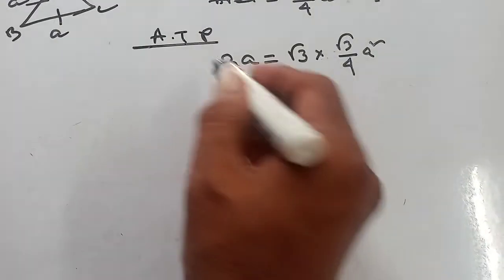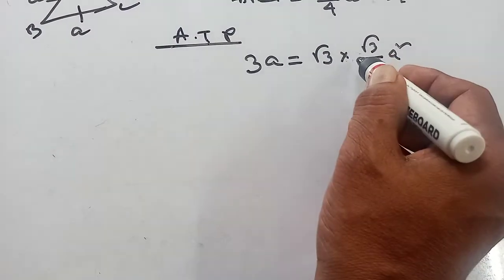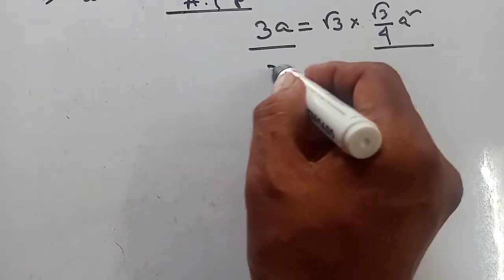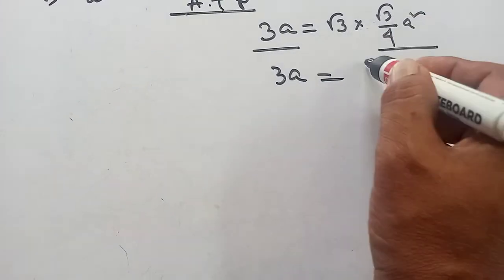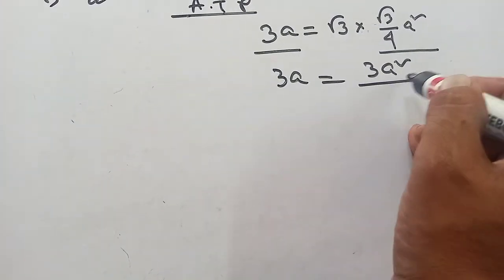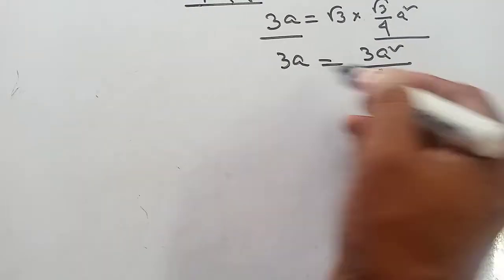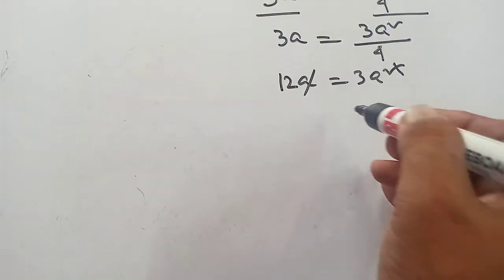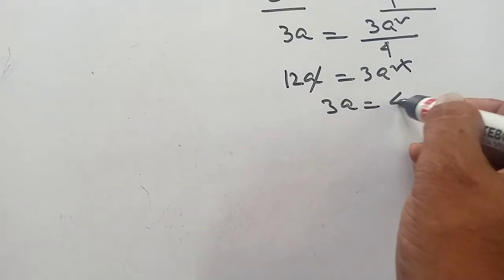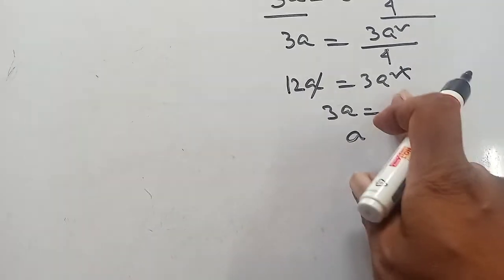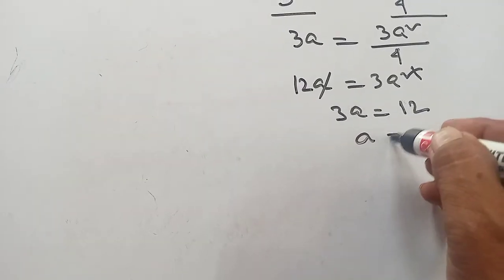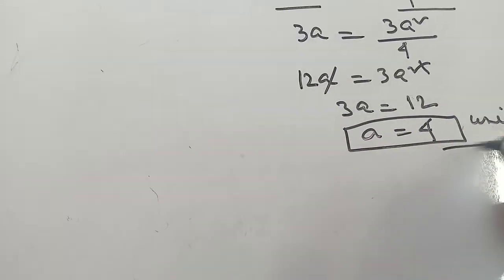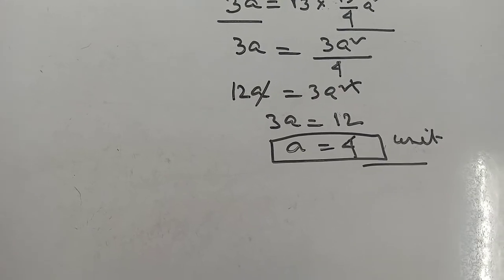According to the problem, perimeter equals root 3 times area. So 3A equals root 3 into root 3 by 4 into A squared, which gives 3A equals 3A squared by 4. Multiplying both sides: 12A equals 3A squared. Cancelling A from both sides: 12 equals 3A, so A equals 4 units. Therefore, the side of the equilateral triangle is 4 units.